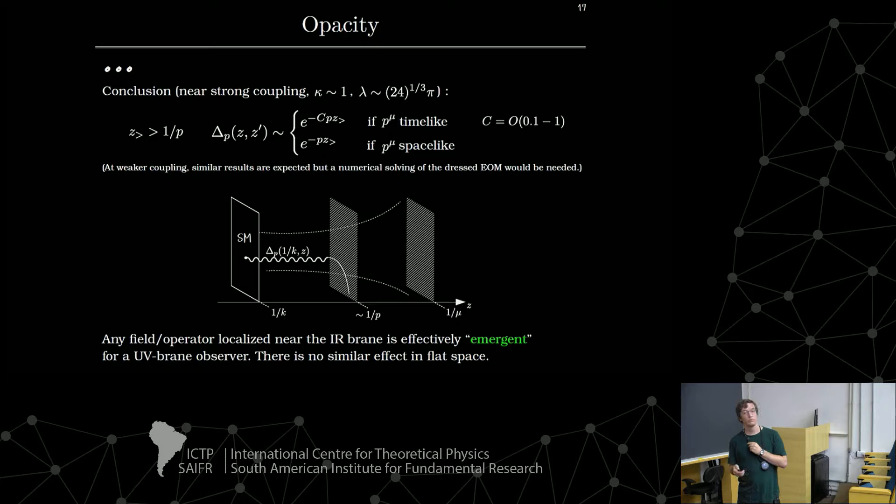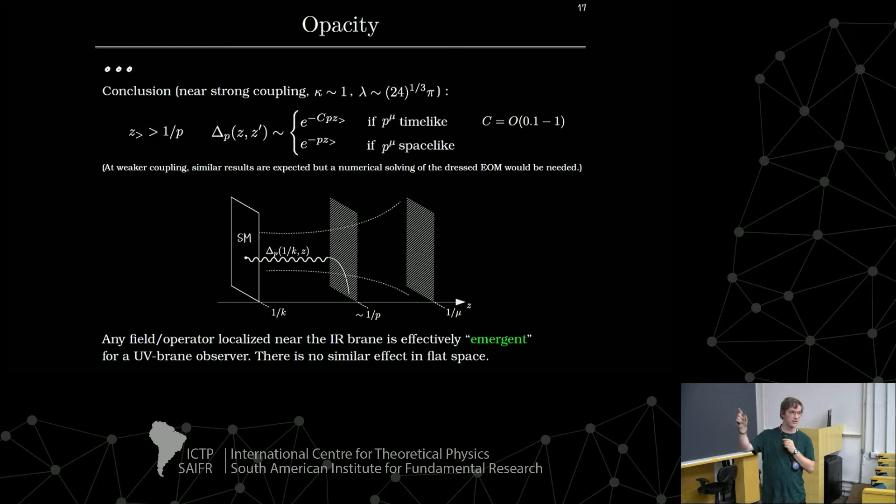At weaker coupling, the calculations are more difficult because you have extra contributions that are complicated. A numerical solving will be needed. However, I do expect the conclusions remain at weak coupling. And so basically we have this picture. And just to repeat, the nice thing is that anything which is localized on this IR brane is emergent from the UV brane observer.